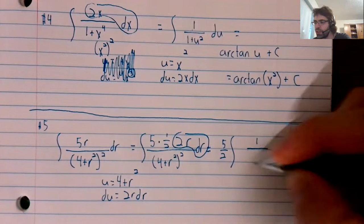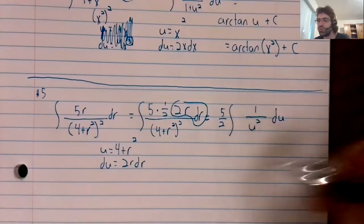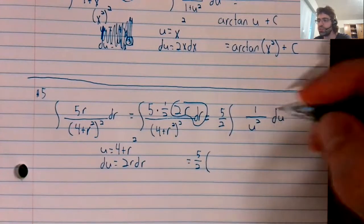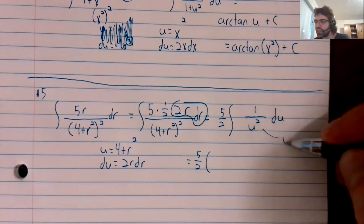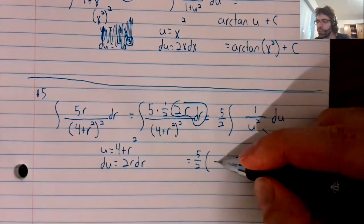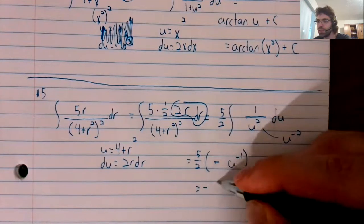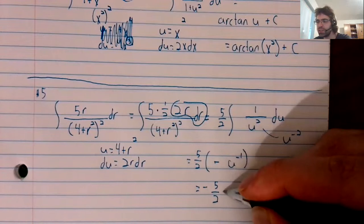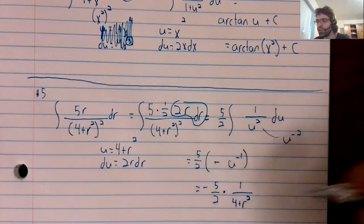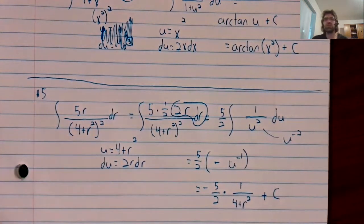This two r dr gives us du. So we just have one over u squared du. Five halves. So this is u to the negative second, sorry. So we bump that power up, but we also divide by this new power. We get negative five halves times one over u. Plus a constant of integration.